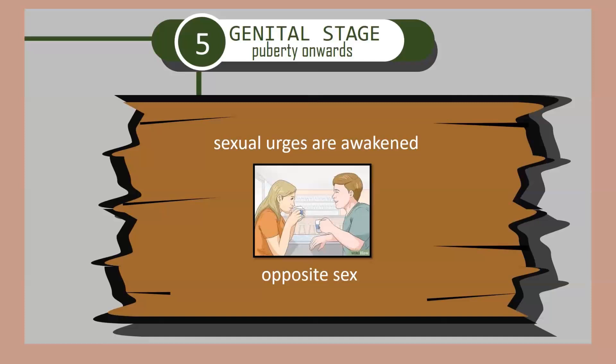Boys begin to view their fathers as a rival for the mother's affection. The Oedipus complex describes these feelings of wanting to possess the mother and the desire to replace the father — which is what Oedipus did, killing his father to marry his mother Jocasta. However, the child also fears punishment from the father for these feelings, which is the castration anxiety we discussed. That's all our lessons for today. We discussed the psychosexual development stages of Sigmund Freud. Goodbye and thank you.